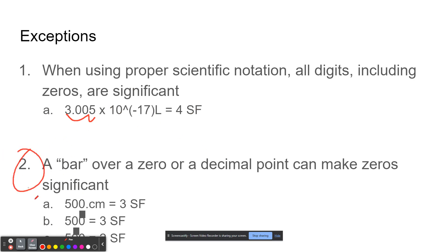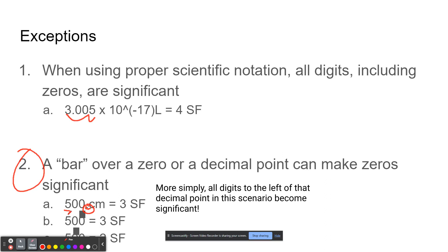The second exception is that a bar over a zero or a decimal point can make a zero significant. As we said, 500 without a decimal point was only one sig fig because the zeros are used to space the decimal. But if you put a decimal point there, that would indicate the measurement was certain to a specific point, and then you estimated the last digit, so it would basically give you three sig figs.